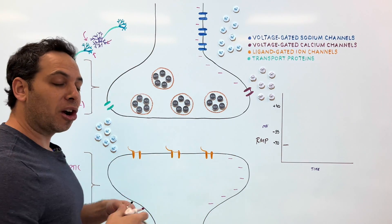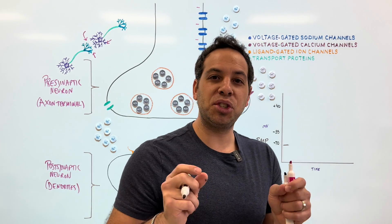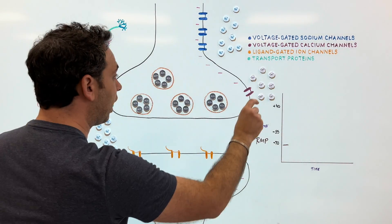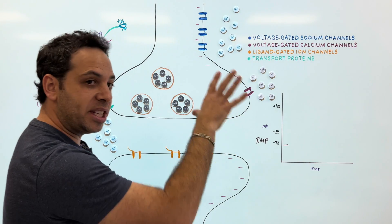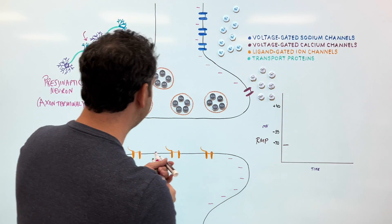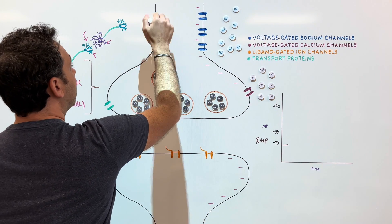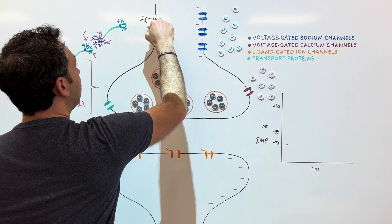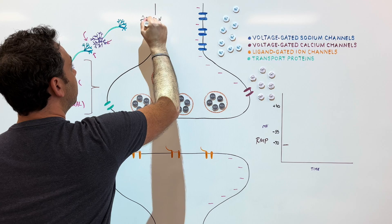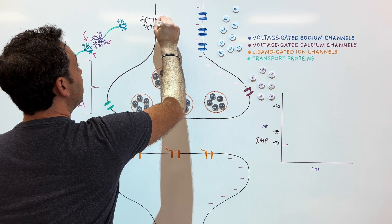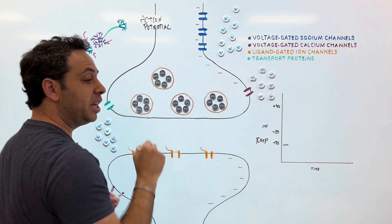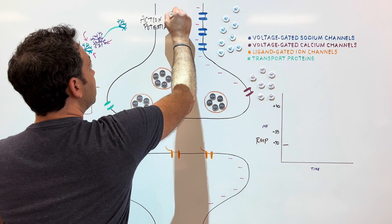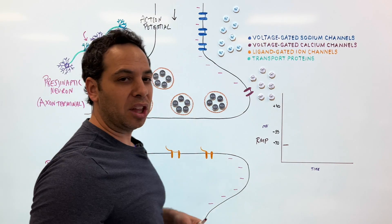How does a neuron actually fire? We have to start with an electrical charge — we need some charge to go down the neuron and reach the end. That charge is called an action potential. In other words, every neuron has the potential to fire, and this is the charge that's going to travel down the length of the neuron.